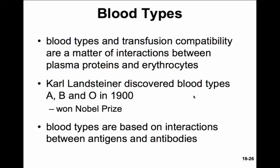The blood types are based on interactions between antigens and antibodies. An antigen is a cell label, and an antibody is something produced by the immune system that attacks that particular label when it's non-self.